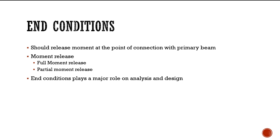Now for end conditions: since secondary beams are used only for load transfer, shear connections are deployed in practice. When shear connections are used, we should release the moment at the connecting point to the main beam. There are two options: full moment release and partial moment release.